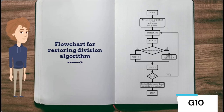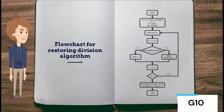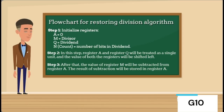Now let's go through the flowchart of the division restoring algorithm. Here is the flowchart, which shows the working of the algorithm covering initialization, conditional statements, and the ending. Let's understand it step by step.